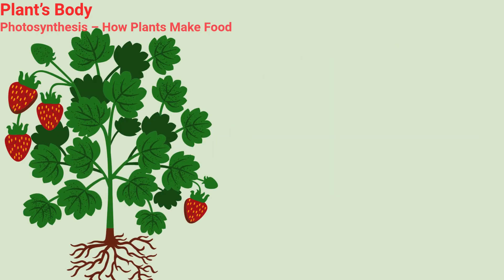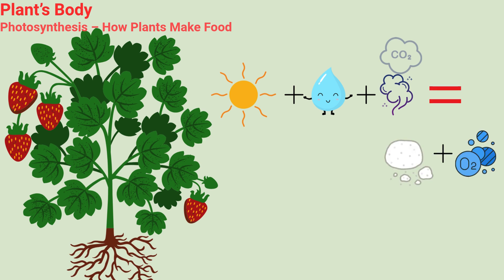Plants are amazing because they can cook their own food. This is called photosynthesis. Sunlight plus water plus air, carbon dioxide, produces food, sugar, and oxygen.